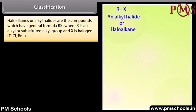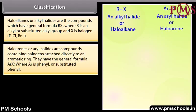Haloalkanes or alkyl halides are compounds which have the general formula RX, where R is an alkyl or substituted alkyl group and X is the halogen F, Cl, Br, or I. Haloarenes or aryl halides are compounds containing halogens attached directly to an aromatic ring. They have the general formula ArX, where Ar is phenyl or substituted phenyl.